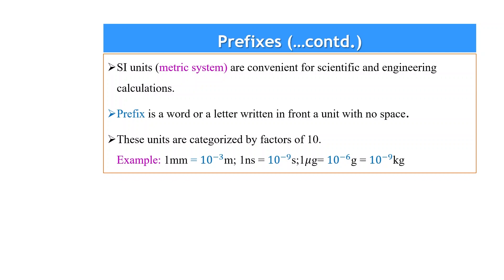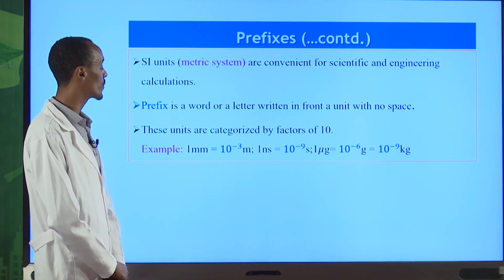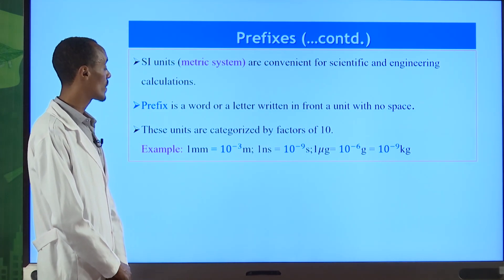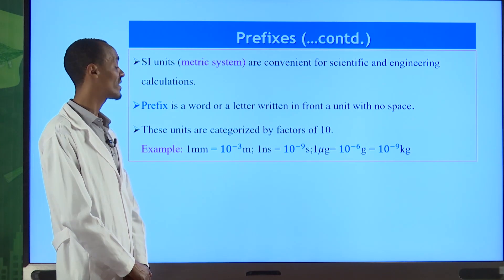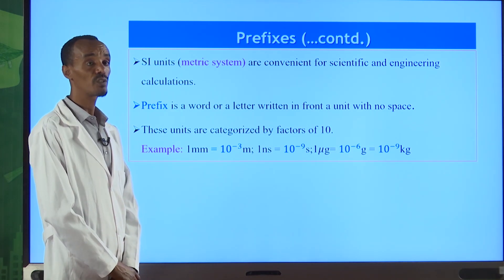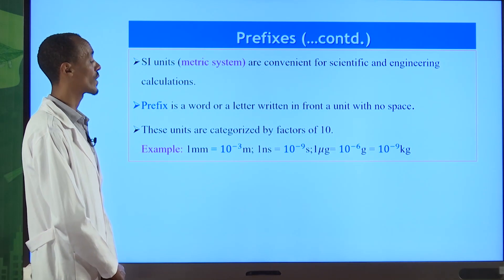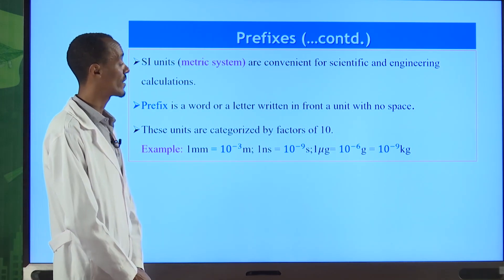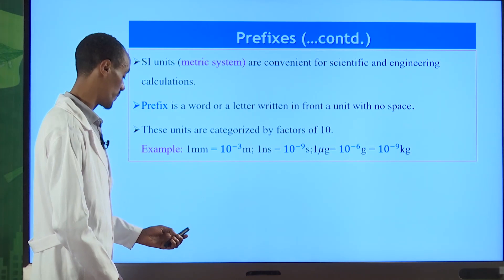One millimeter: 'milli' is 10⁻³, so one millimeter equals 10⁻³ meters. One nanosecond: 'nano' is 10⁻⁹. One microgram: 'micro' is 10⁻⁶, so it is 10⁻⁶ grams. You can use these prefixes in different units where appropriate.